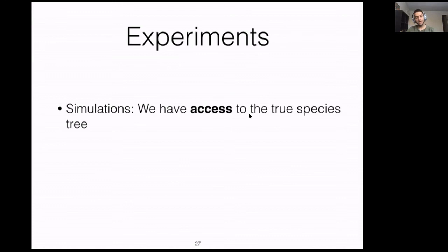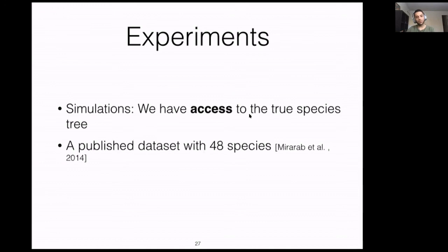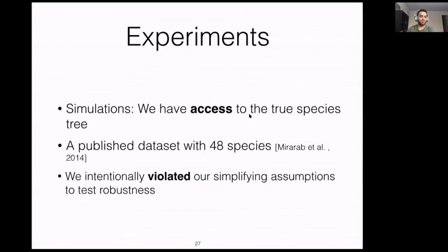To evaluate local posterior probability, we did simulations and empirical analysis. For simulations, we have access to the true species tree. For biological experiments, we used a dataset with 48 species. In these experiments, we intentionally violated our simplifying assumptions — the locality assumption might be wrong, and we also introduced gene tree error, which violates the assumption that the only source of discordance is ILS, in order to compare our method with multi-locus bootstrapping.